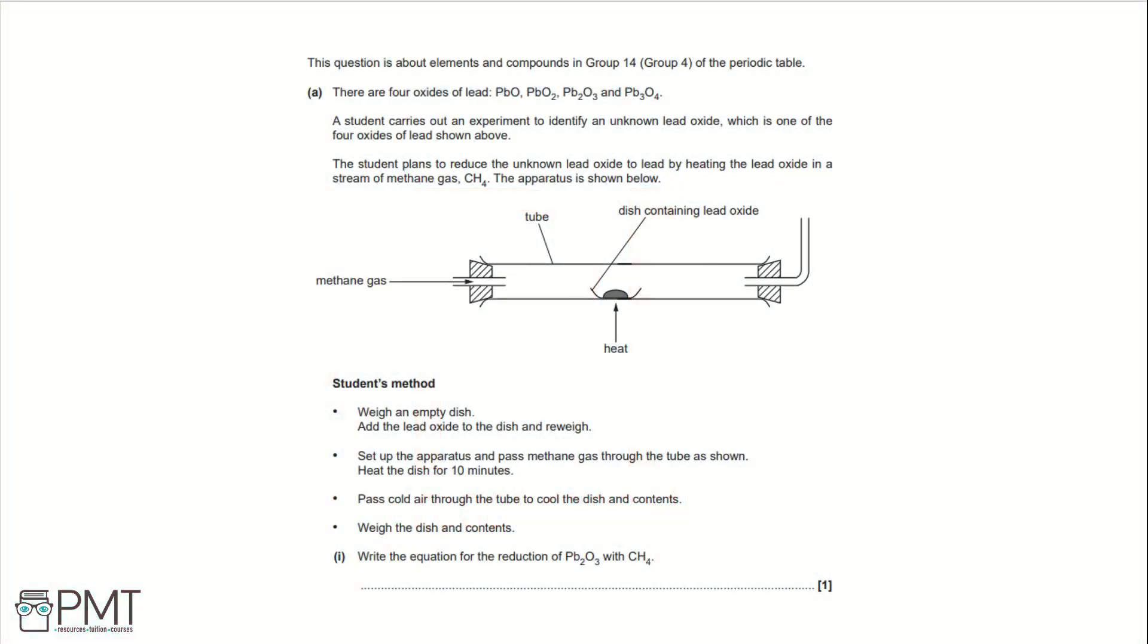This question is about elements and compounds in Group 14 or Group 4 of the periodic table. Part A. There are four oxides of lead: PbO, PbO2, Pb2O3, and Pb3O4. A student carries out an experiment to identify an unknown lead oxide which is one of the four oxides of lead shown above. The student plans to reduce the unknown lead oxide to lead by heating the lead oxide in a stream of methane gas, CH4.